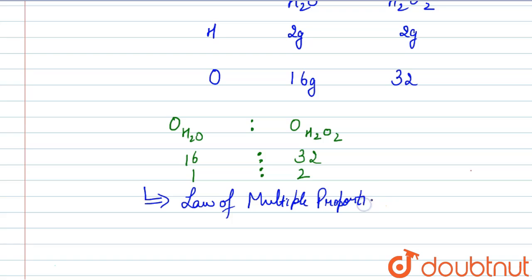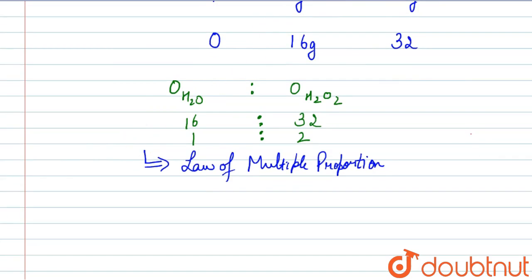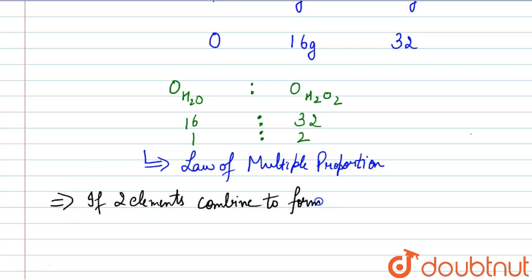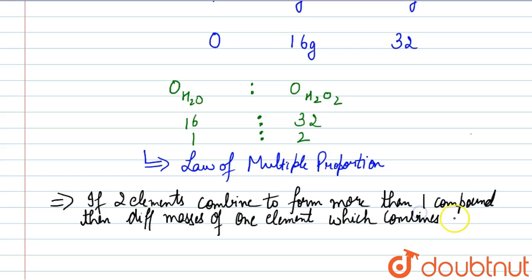Now let's discuss what the Law of Multiple Proportions means. According to this law, if two elements combine to form more than one compound, then different masses of one element which combine with a fixed mass of another element bear a simple whole number ratio.